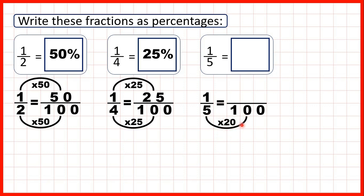What we do to the denominator, we do to the numerator. 1 times 20 is 20. So because 1 fifth is equivalent to 20 hundredths, that's the same as 20%. So let's have another look at these fractions.